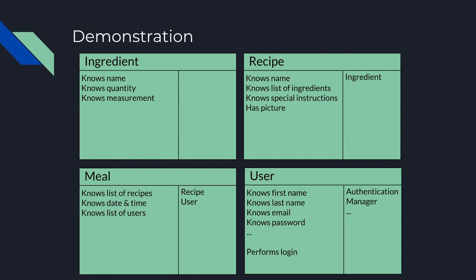On the user card we list a few responsibilities of the user — there are probably many more items to put in the user class, but these few will suffice. A user will know certain information like their name, email, and password. On CRC cards we can also list not only what a class knows but what it does. In this case, one of the actions of a user is to log in, and it may collaborate with the authentication manager to do that. And we could keep going on listing what each class knows, what it does, and who it interacts with.